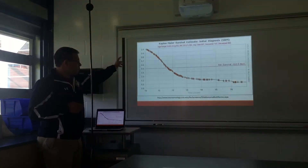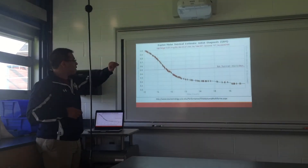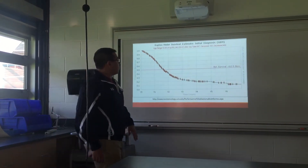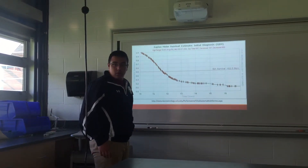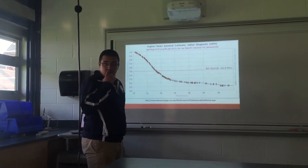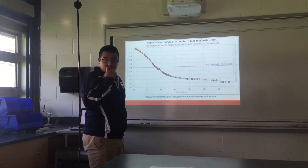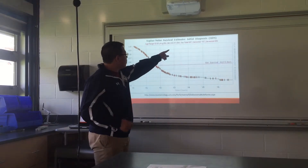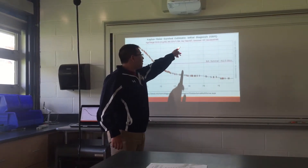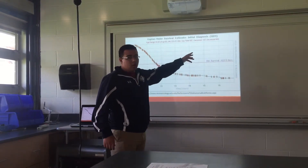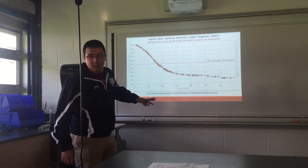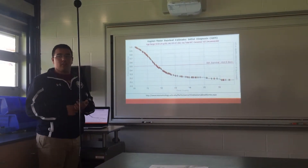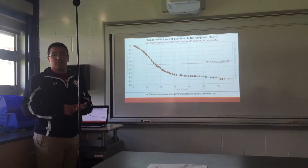This is just a graph showing the diagnosis between the age ranges of 18 and 93. The total group surveyed was 587, and since then 400 of them have died, so that's a very high percentage. The estimated survival rate of glioblastoma is less than two years from diagnosis.